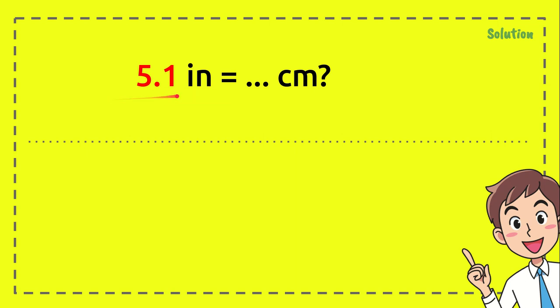First, just write the question again: 5.1 inch equals how many centimeters. And after that we need to write the formula again: 1 inch equals 2.54 centimeters. And after that we need to rewrite the formula again.